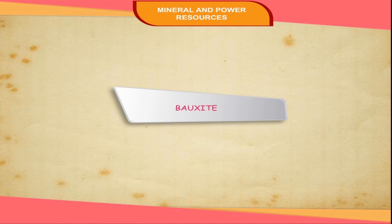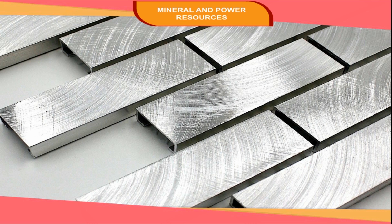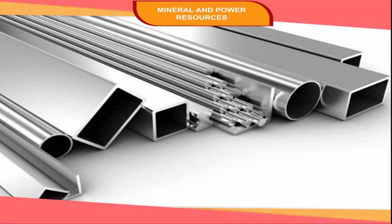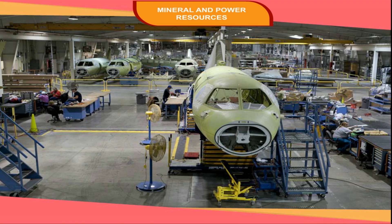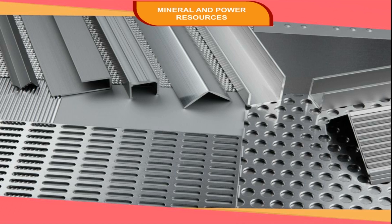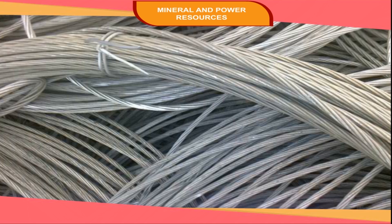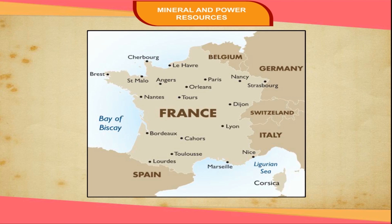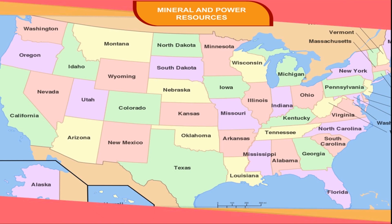Aluminium is extracted from its ore called bauxite. This metal is light in weight and is preferred to iron in many uses. The aircraft industry is a big user of aluminium. Other industries that use aluminium include the electrical industry and coin minting. The major producers of bauxite are Jamaica, France, Australia, and USA.